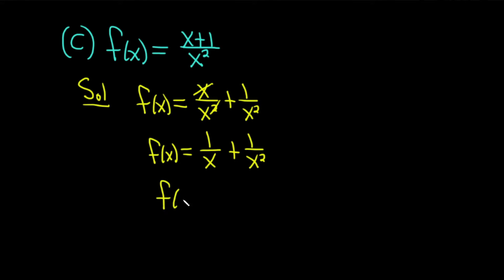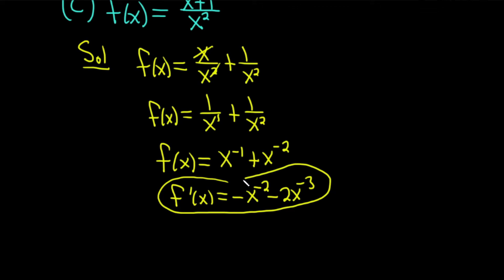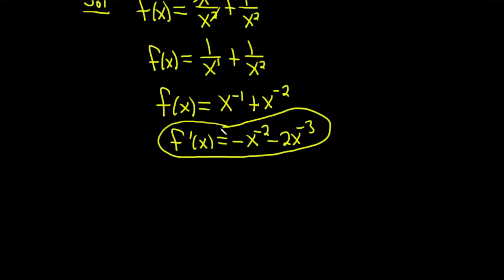What we can do is bring all the variable terms upstairs, making the exponents negative. There's really a 1 here on the x — when you bring it up, it becomes x to the negative 1. Same thing here: plus x squared brought up gives x to the negative 2. Now we're ready to differentiate. So f prime of x is equal to: bring down the negative 1, giving minus x to the negative 2; bring down the minus 2, giving minus 2x to the negative 3. So f prime of x equals minus x to the negative 2 minus 2x to the negative 3, or equivalently, minus 1 over x squared minus 2 over x cubed.